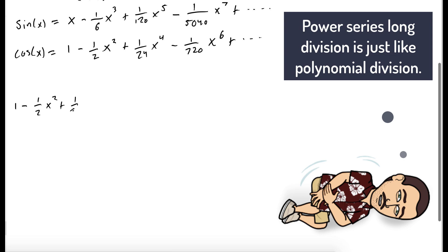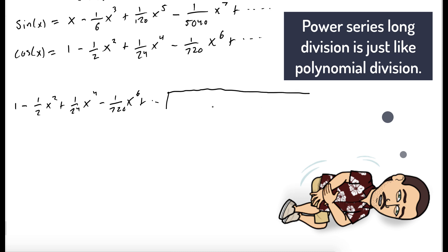Long division with power series is very similar to long division with polynomials. We write out the Maclaurin series for cosine, and since we're dividing sine by cosine, sine is going to be on the inside. We ask how many times does the lowest term of cosine go into the lowest term of the remainder.